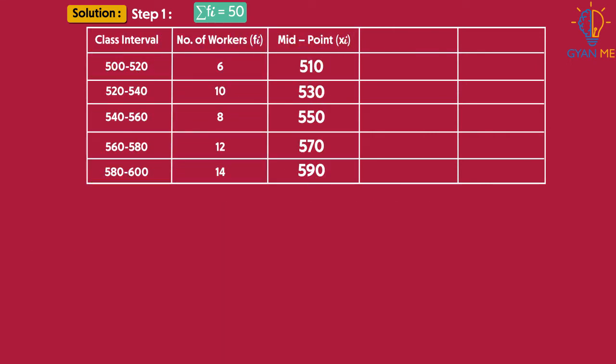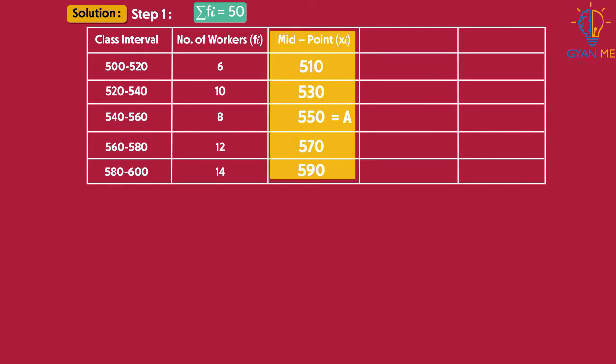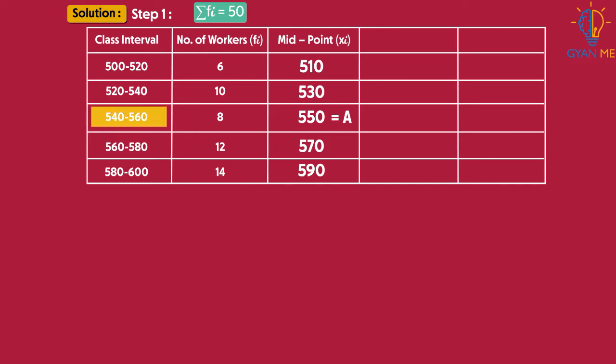Now, the next step is to select our assumed mean. For that, observe our column of xi values and select any value of xi. Call it assumed mean A. Here we observe that class 540 to 560 is the middle class. Let us assume the corresponding xi of this class as assumed mean A. So our assumed mean will be 550.